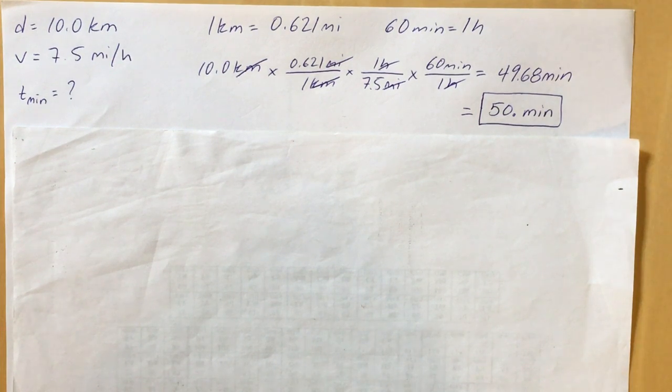In order to do this problem which is a conversion of kilometers to minutes, you need those two conversion factors up at the top of the page: one kilometer equals 0.621 miles and 60 minutes equals one hour.